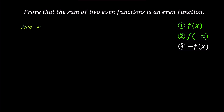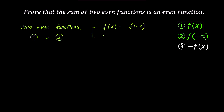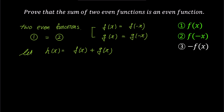This time, let's prove whether the sum of two even functions becomes an even function. First, we need to define two even functions. Given that representations 1 and 2 are equal for even functions, we can define them as f(x) equals f(-x) and g(x) equals g(-x). Now, let's denote the sum of the two even functions as h(x), which is h(x) equals f(x) plus g(x). We'll write down representations 1, 2, and 3 again.